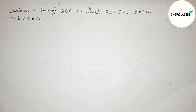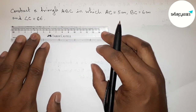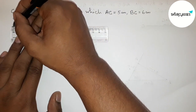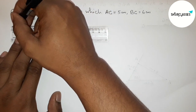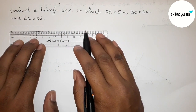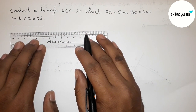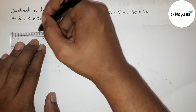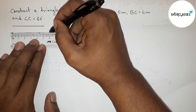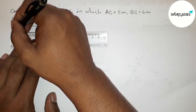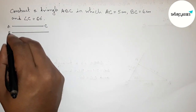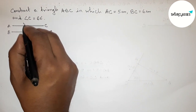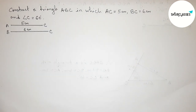Let's start the video. First of all, let us draw the given two sides. Drawing 5 centimeter starting from 0 — this is the 5 centimeter line. Now drawing another line 6 centimeter, starting from 0 — this is the 6 centimeter line. So this one is the AC line and this one is the BC line.